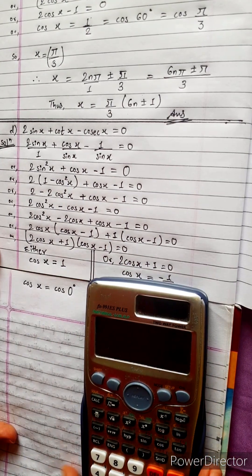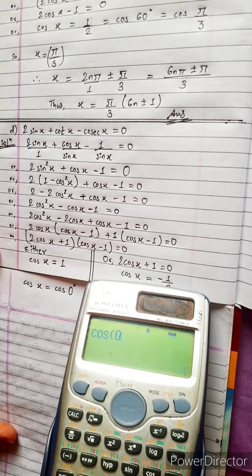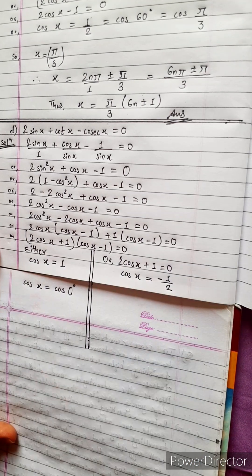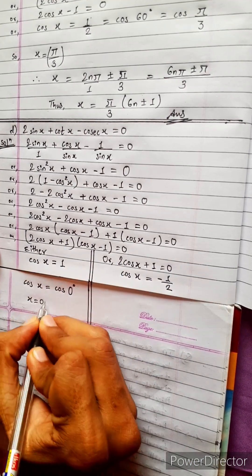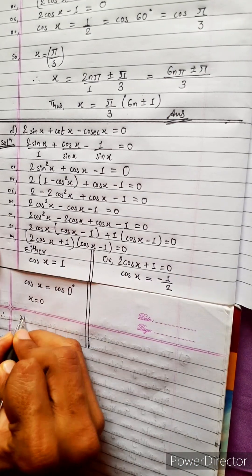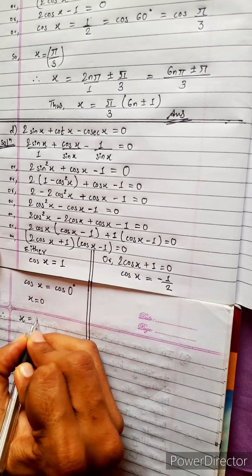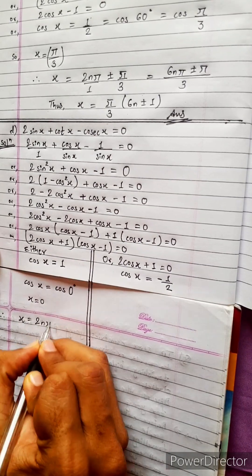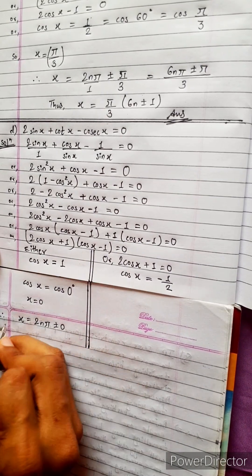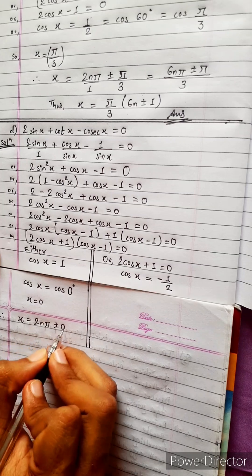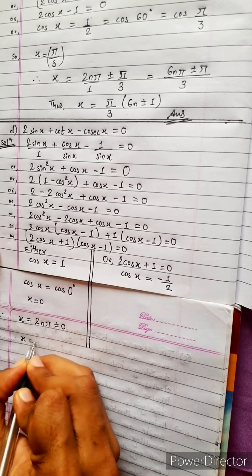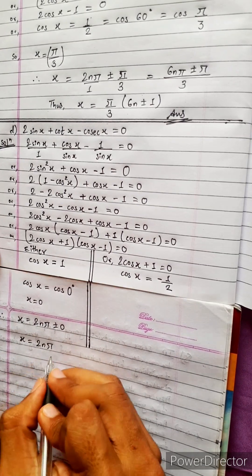For cos x = 1: since cos 0° = 1, we have cos x = cos 0. Using the general formula x = 2nπ ± 0, so x = 2nπ.